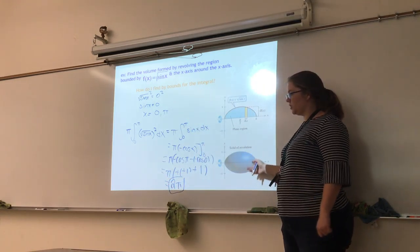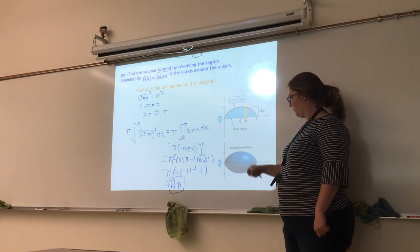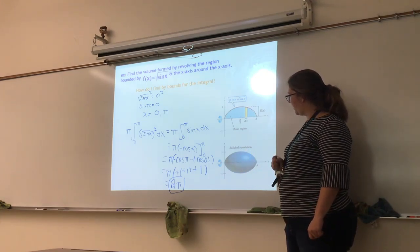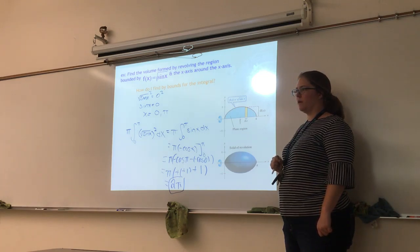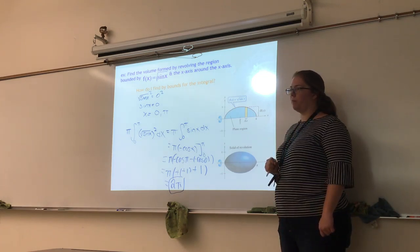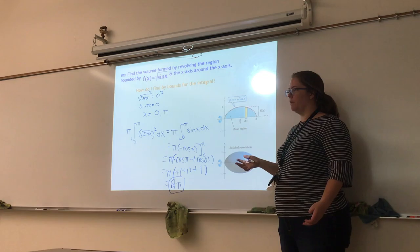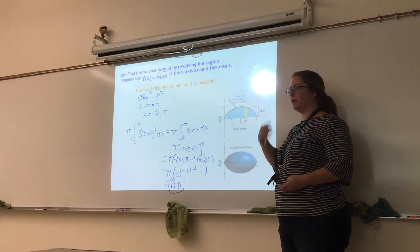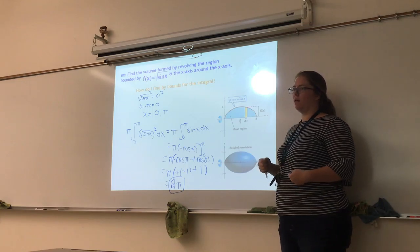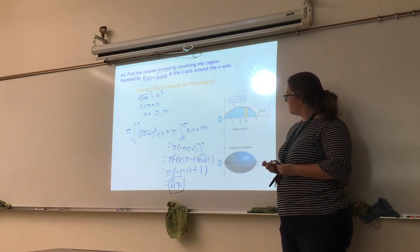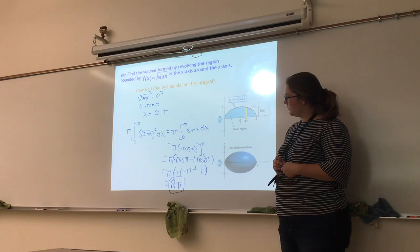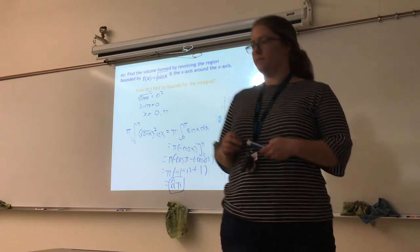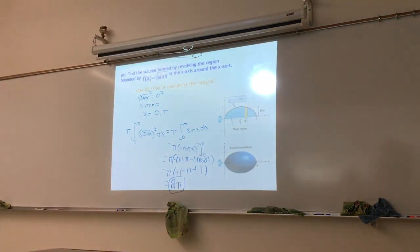So my volume is two pi. This is what the shape would look like if you were revolving around — it could almost model the volume of a football. A football is an irregular shape, and so if this function modeled that football and you rotate it around, now we can actually compute its volume. We're going to do one more, and then the rest will be for tomorrow.